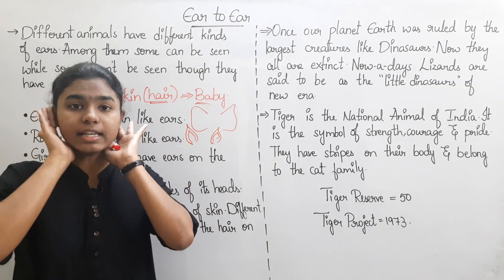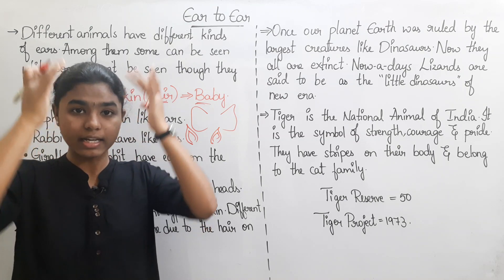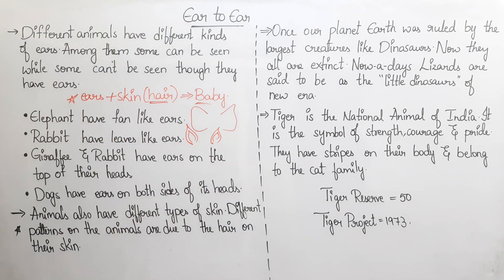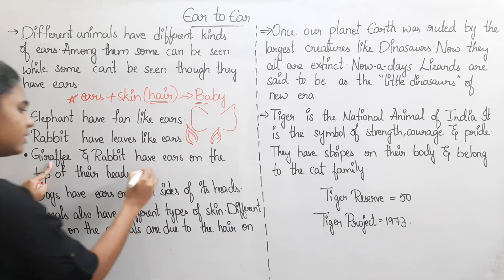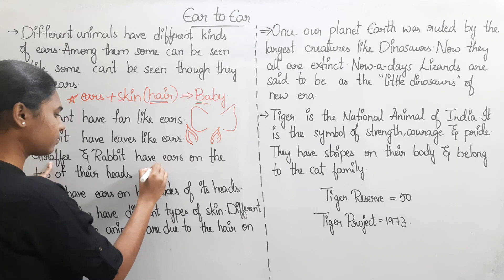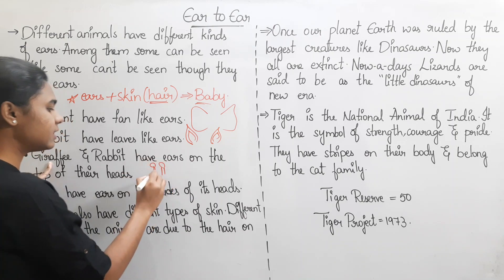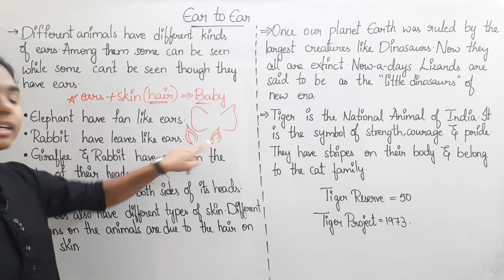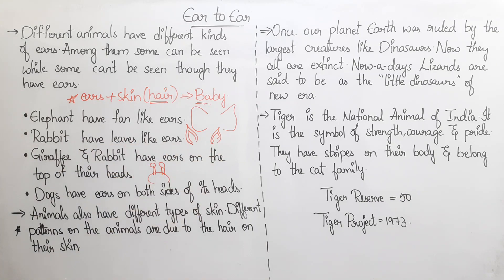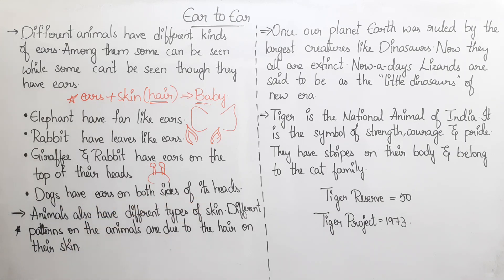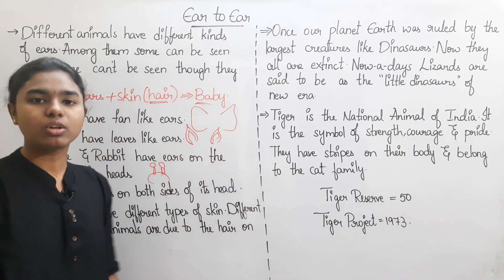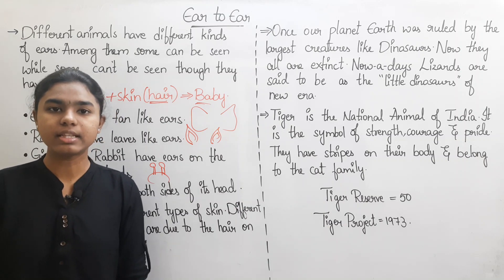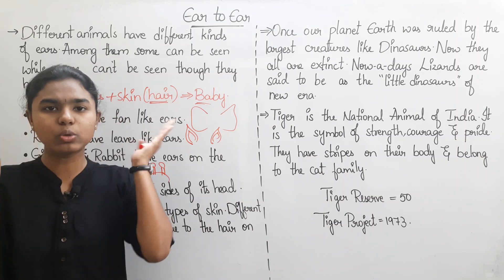Giraffes and rabbits have ears on the top of their head. Dogs have ears on both sides of the head.